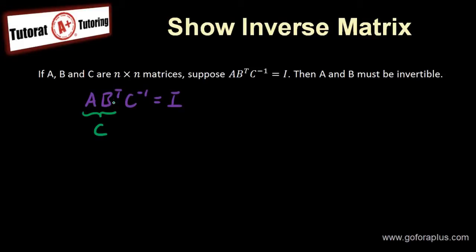Okay, so if I have C times C^(-1) equal to I, then I know that C equals to AB^T.